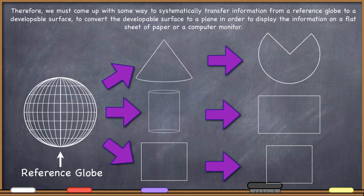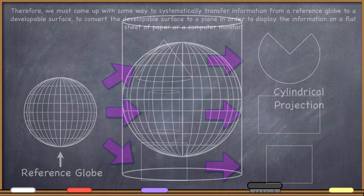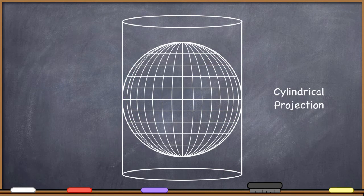So here are the steps of making a flat map. You go from a reference globe, which is a sphere. You somehow get that information onto a developable surface, and then you convert the developable surface into something flat. Here is a cylindrical projection being made — I've just taken a cylinder and slid it over the reference globe. This is a three-dimensional cylinder being slid over the sphere.